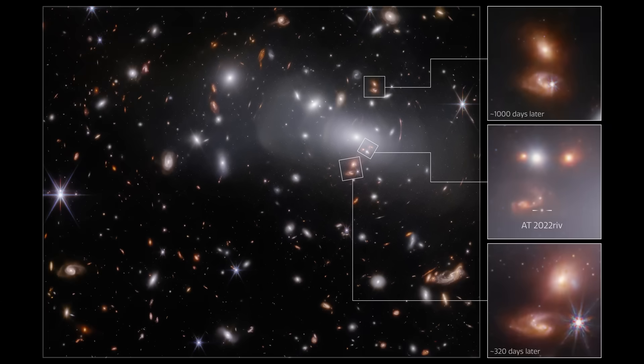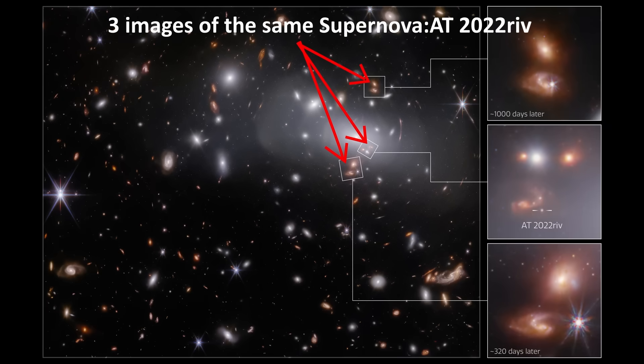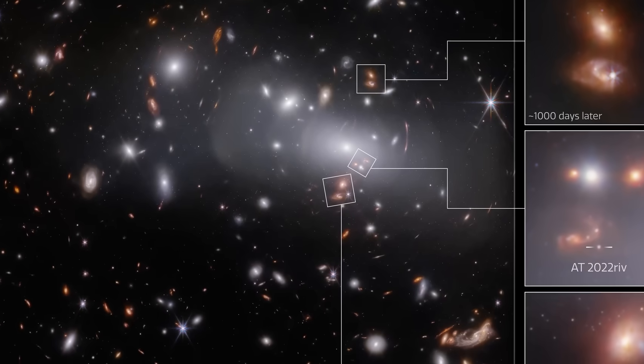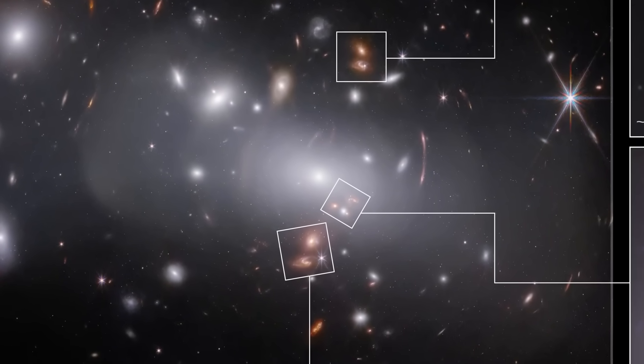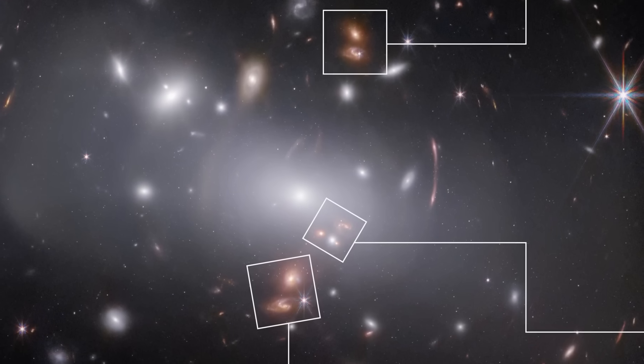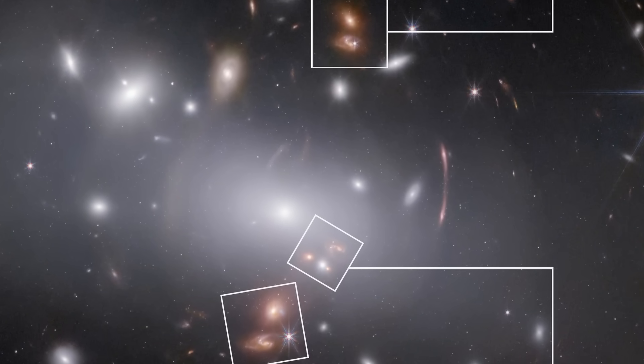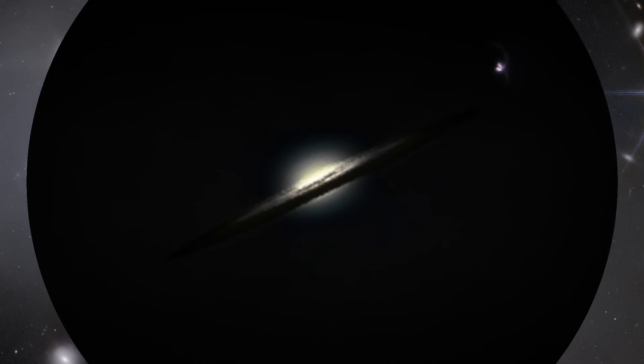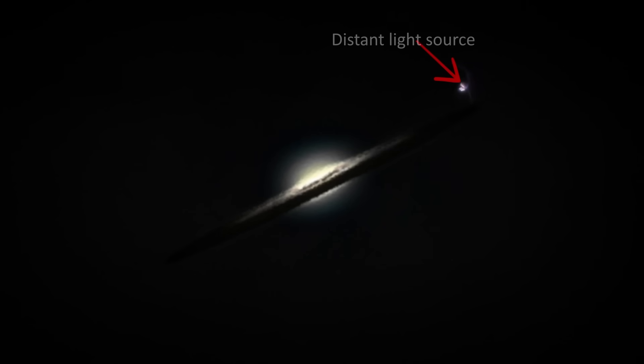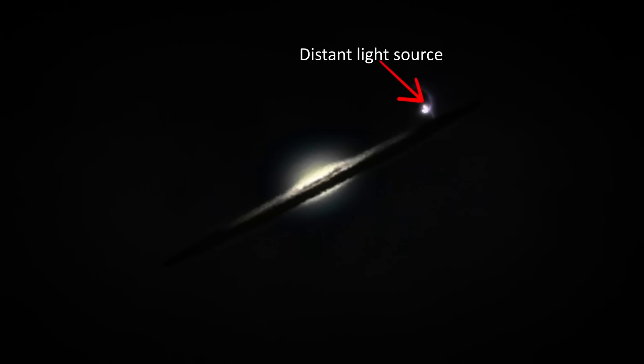An example of how this works is the supernova AT 2022 RIV, located about 9 billion light years away. It's sending out light spherically outward from where it's located. These light waves would just keep going straight if the universe were empty. And if that were the case, we would see a single picture of the supernova at a moment in time 9 billion years ago. But the universe is full of massive objects between this supernova and us that can bend the light.